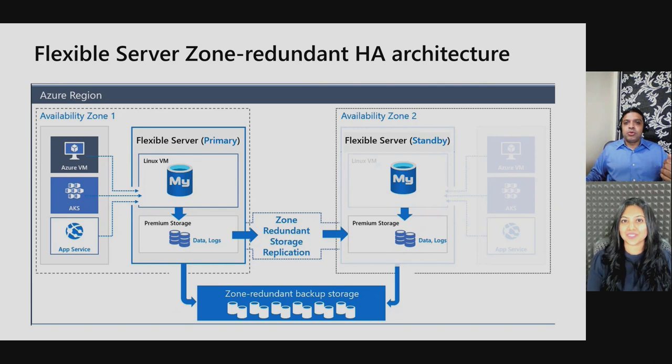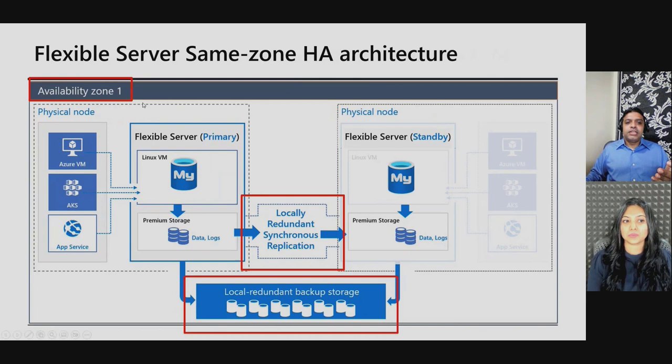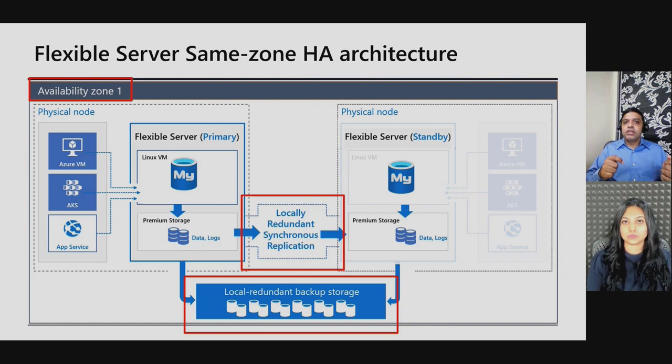Same Zone HA is a similar architecture but uses locally redundant storage instead of zone-redundant storage, with both primary and standby in the same zone. That's why the SLA is slightly lower at 99.95% — it doesn't address zone-level failures. Zone Redundant HA uses zone-redundant storage replication to replicate across zones.